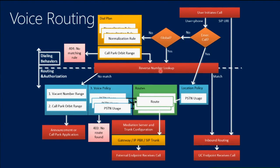If the number is not known in our environment, it must be outside — we need to route it to the PSTN or a legacy PBX. We first check if it's in the range of our vacant numbers; if so we play an announcement. If not, we check the voice policies. Voice policies have PSTN usages — the question is: is this user even allowed to call this number? I may be allowed to call local numbers in Vienna but not international numbers; you can control this with voice policies.